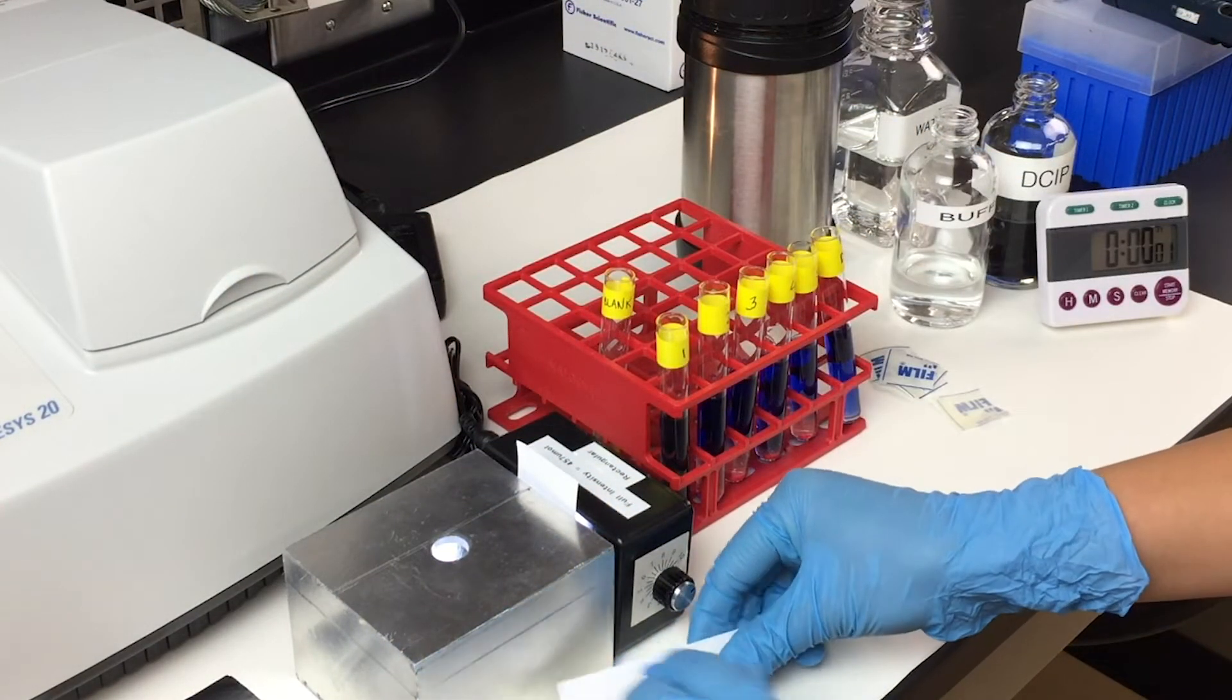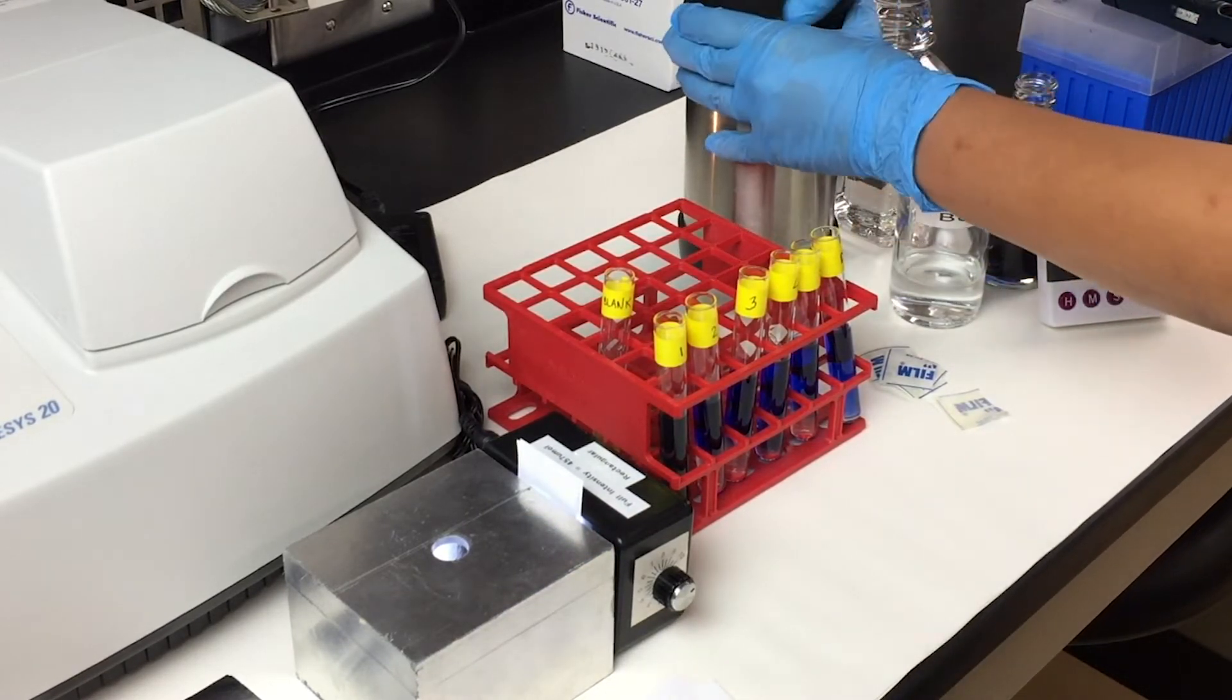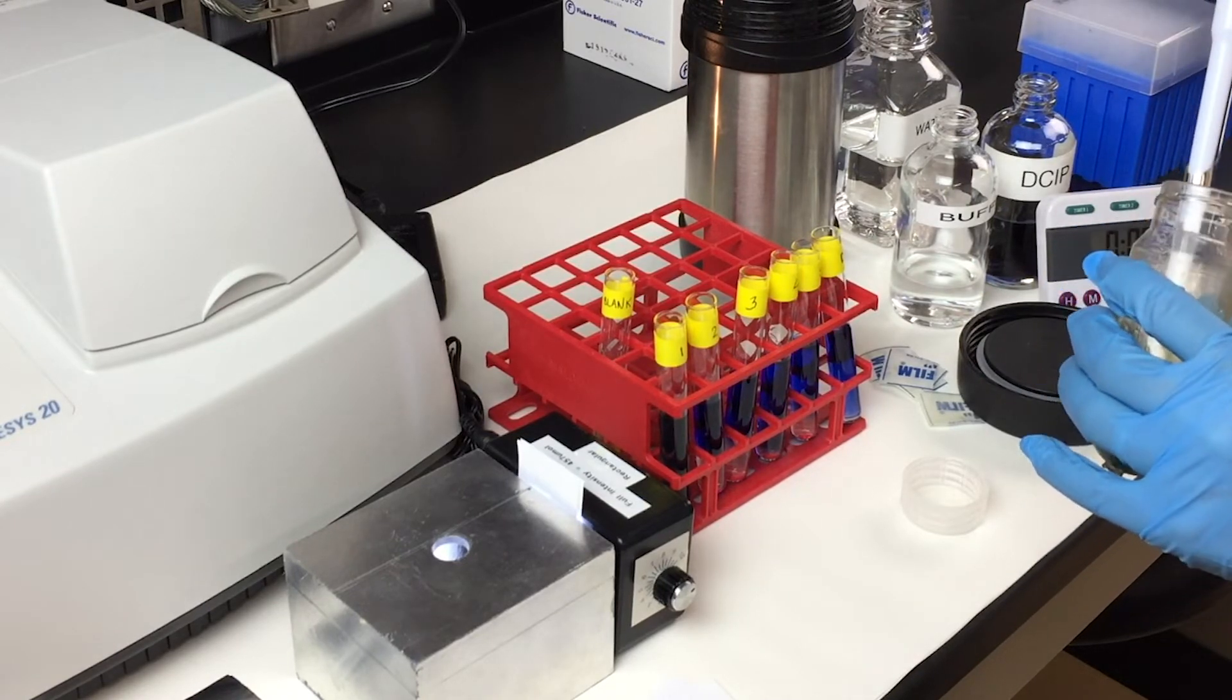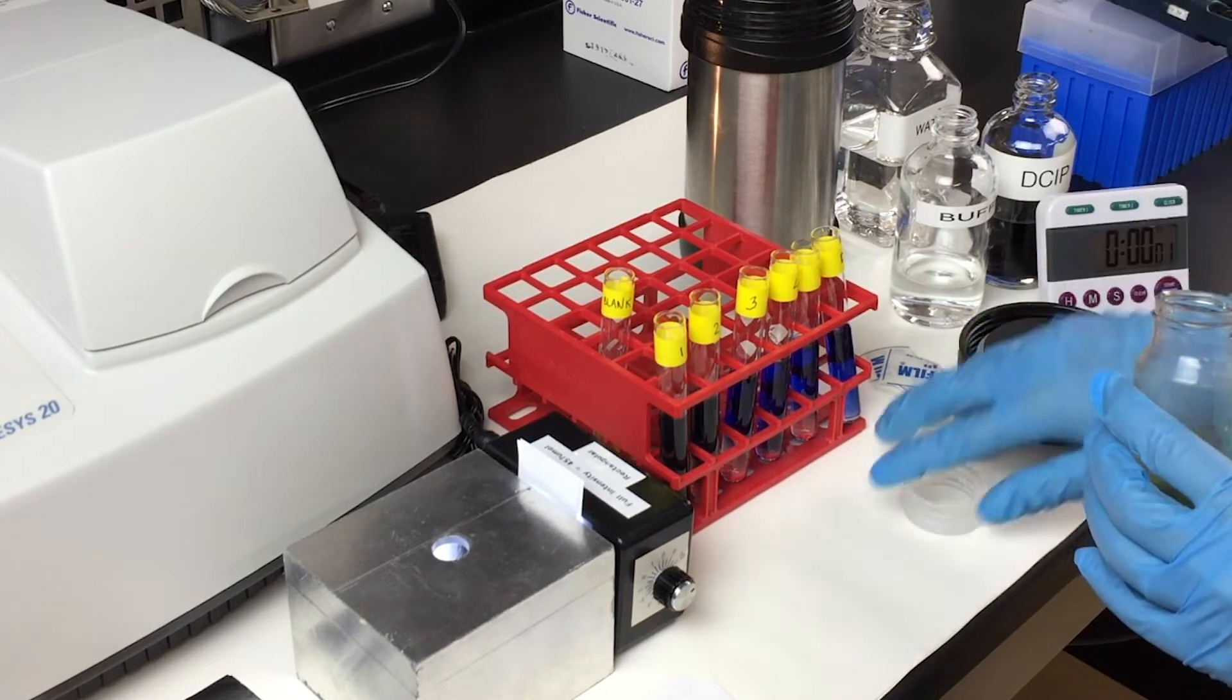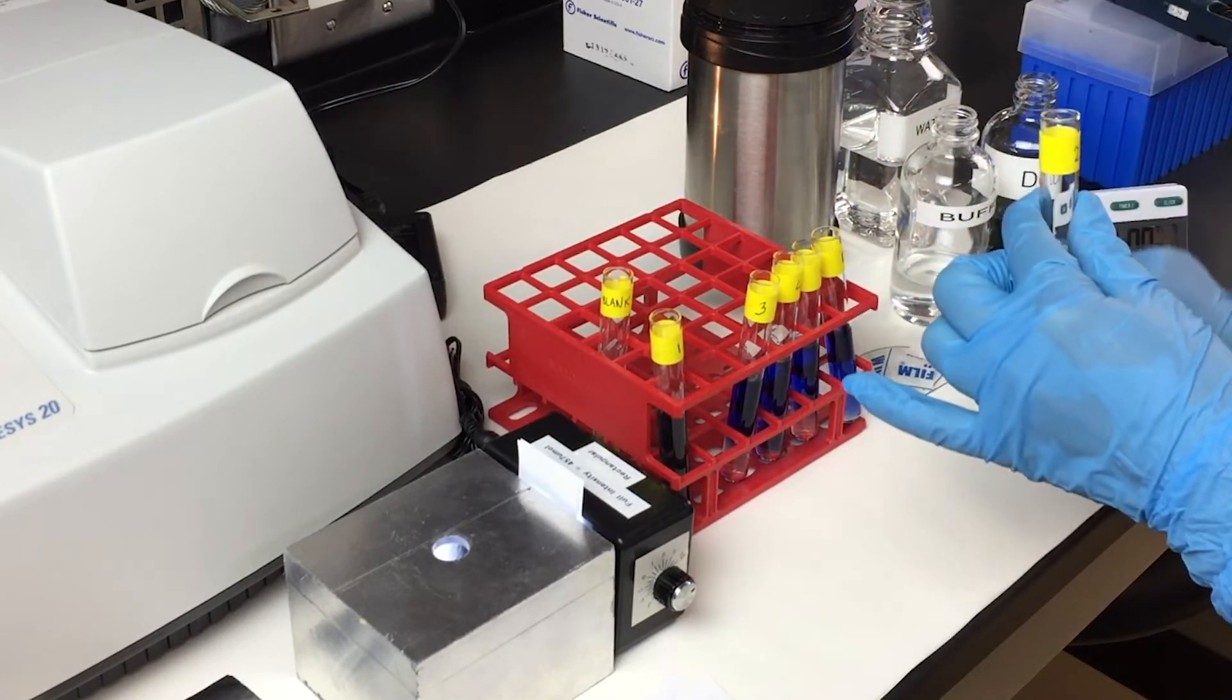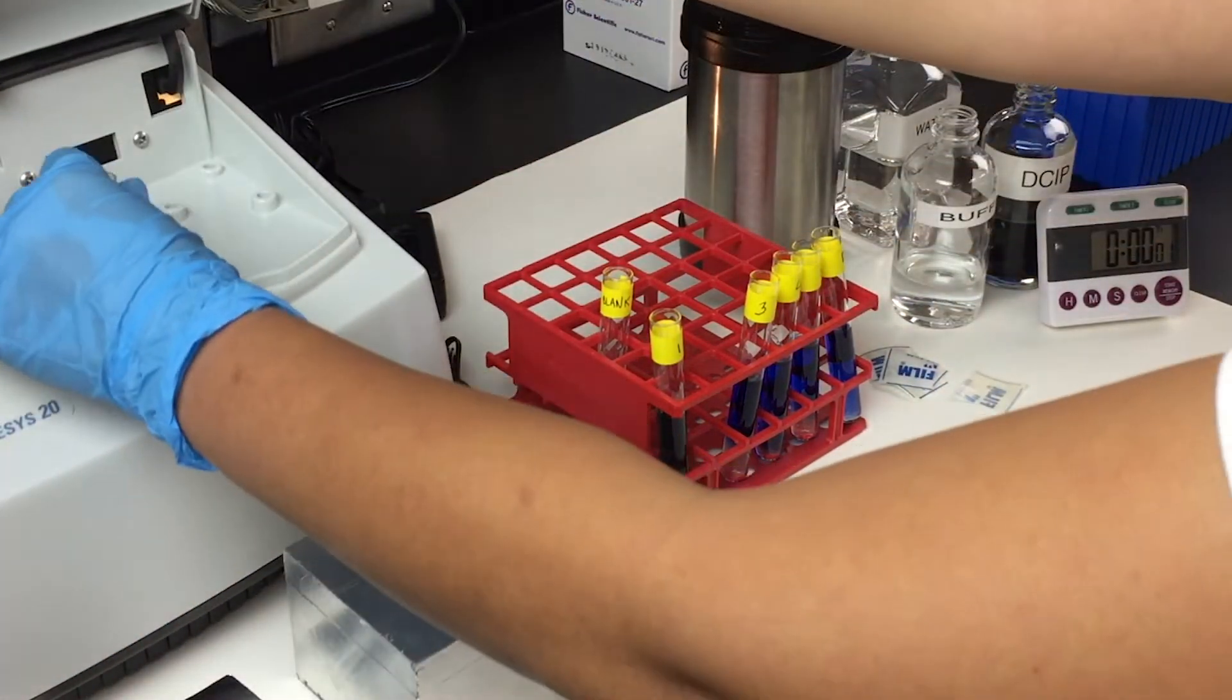Now for test tube two, you would need two layers of filter paper. Similarly, add 0.25 ml of thylakoid solution in test tube two when it is ready. Quickly invert that using a piece of parafilm, read the sample in the spectrophotometer, and record that value as time zero in your lab manual.